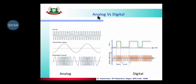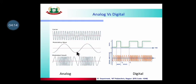First we need to clear the basic concept — what is special about analog and digital systems that gives them their distinct identities. In analog communication, whatever information is sent, it is in analog nature — in the form of a sine wave. But in digital communication, the information we carry is in digital form — that means in the form of ones and zeros.